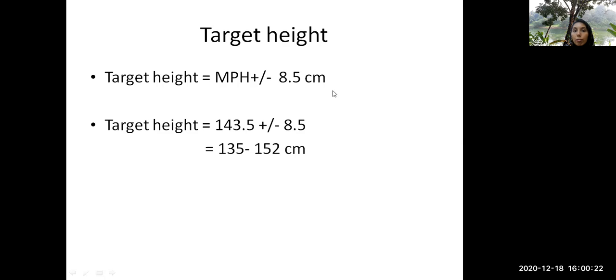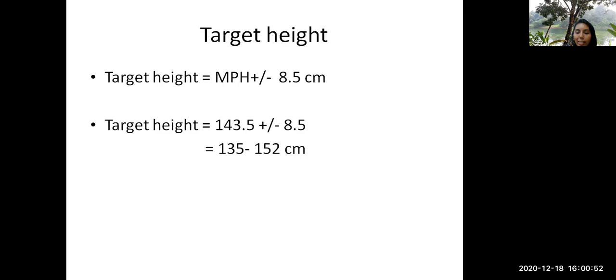So I have used here 8.5 centimeters, the two standard deviation. Either of them you can use. If you use one standard deviation, this is slightly better because you won't miss any case of short stature in your practice. So the MPH when I calculated for this child is 143.5 plus or minus 8.5 centimeters. I got a range like 135 to 152 centimeters. But where should we plot this? This should be plotted at 18 years.